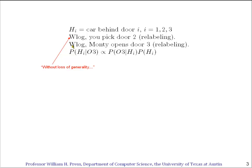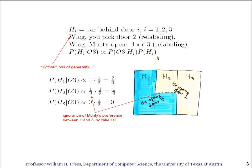We now want to apply Bayes' rule in the usual form: the probability of a hypothesis given the data is proportional to the probability of the data given the hypothesis, times the prior probability of the hypothesis before we saw any data. So let's do it.